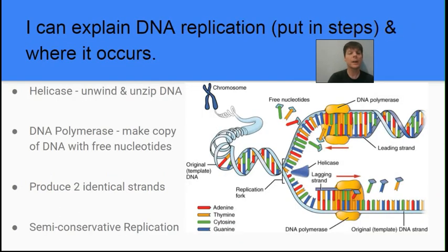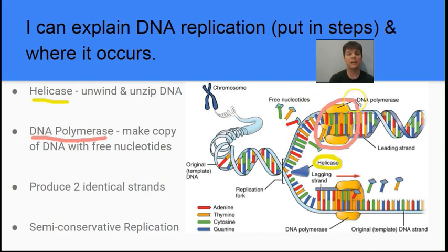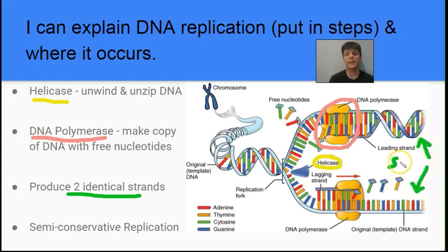Our next learning target is to explain the process of DNA replication — the steps of this process and where it occurs. In eukaryotic cells this is occurring in the nucleus because that is the location of the chromosomes. There are some important enzymes involved: helicase, which unwinds and unzips the DNA (I've circled that in yellow), and DNA polymerase (highlighted in pink), which is the enzyme that copies the DNA. The copying process produces two strands which are identical to each other.